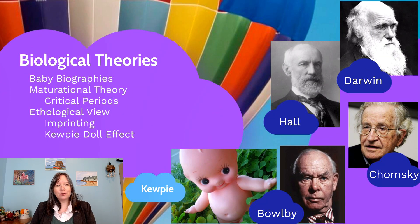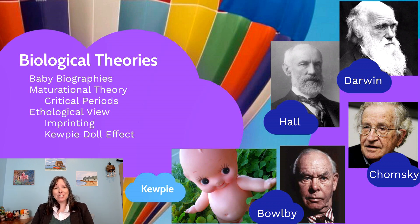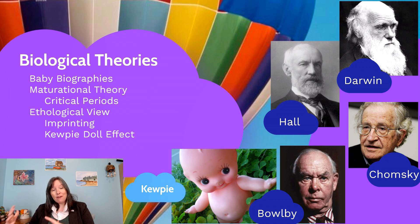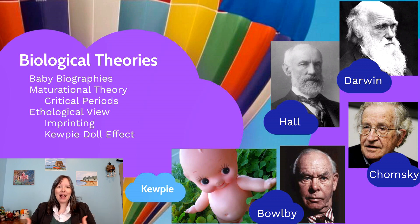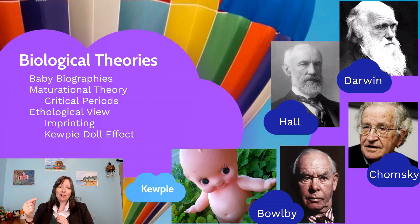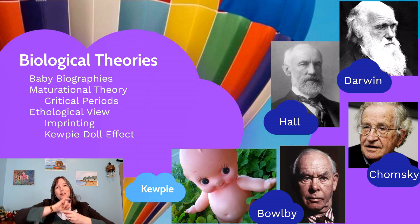When it comes to biological theories, we're really looking at the influence of Charles Darwin. In addition to survival of the fittest and natural selection, Darwin also wrote about baby biographies — the idea that as infants develop they seem to have a mini evolution. G. Stanley Hall, famous psychologist and founder of the American Psychological Association, built on Darwin's writings and was the first person in psychology to apply the idea of evolution to development, looking at it through an evolutionary lens in combination with developmental psychology.